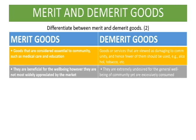Merit goods are beneficial for the well-being of people; however, they are not most widely appreciated by the market. But demerit goods are goods that are damaging, yet they are excessively consumed.